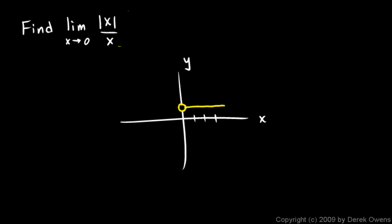Now for negative values of x, we get a little bit different behavior because of the absolute value sign. Let's just imagine if x is negative 1, then we have the absolute value of x, which is positive 1 over x, which is negative 1.